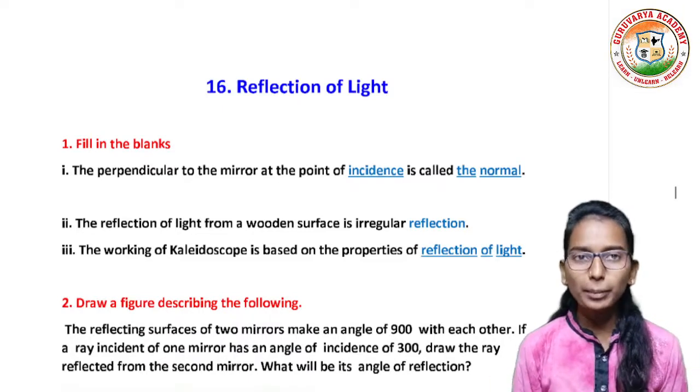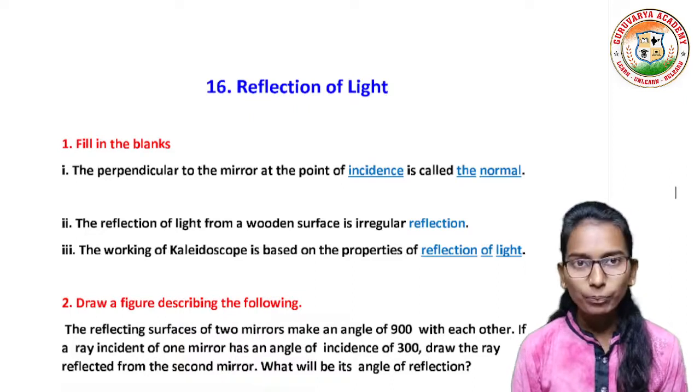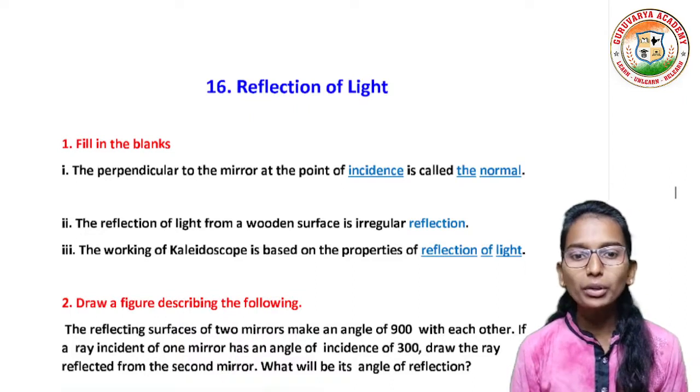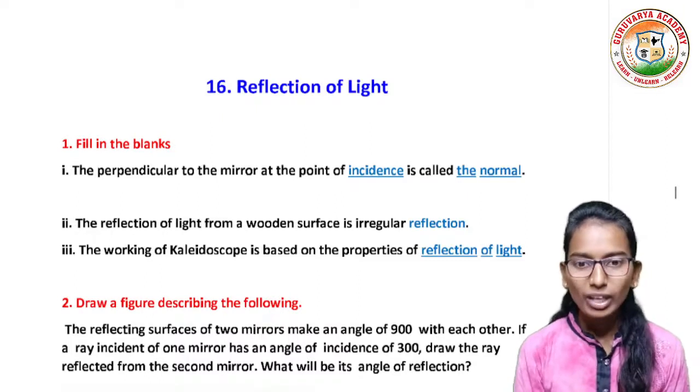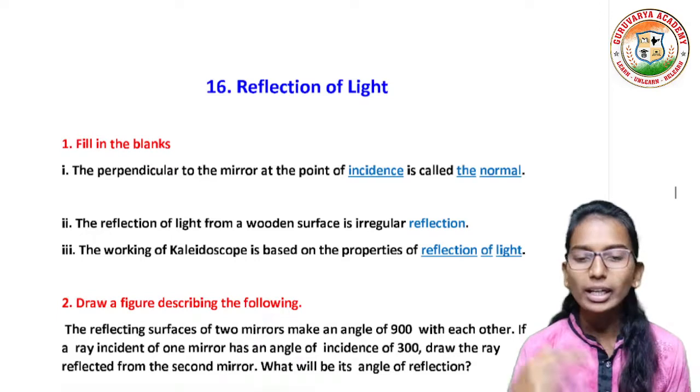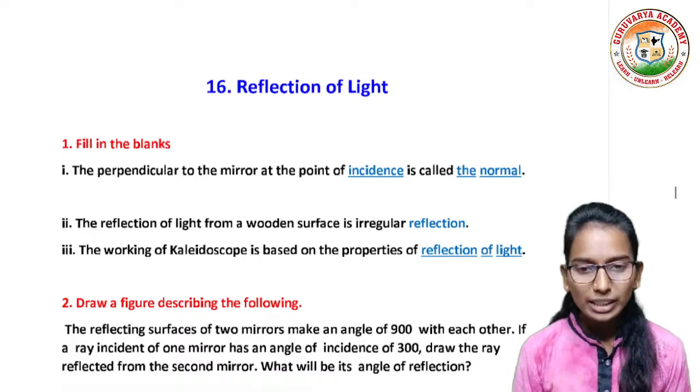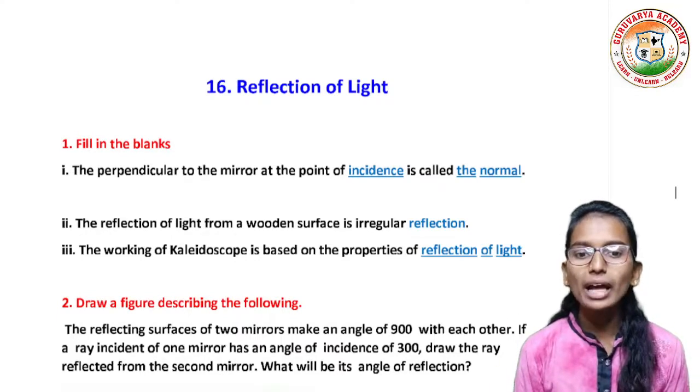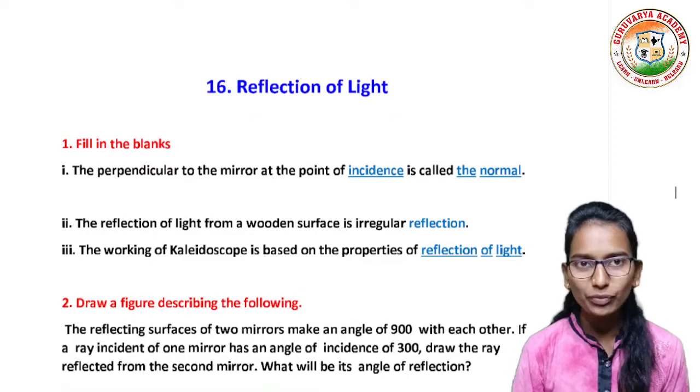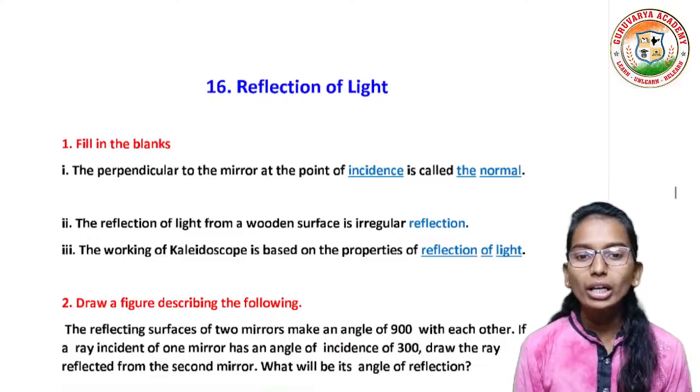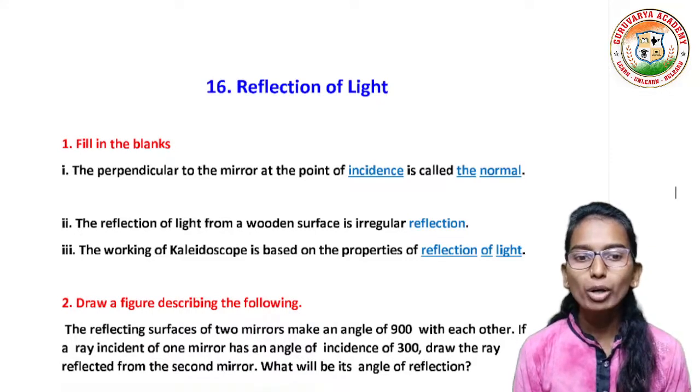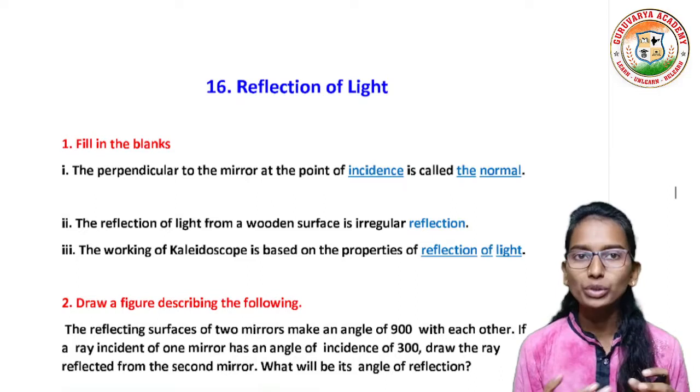Question number first, fill in the blanks. First, the perpendicular to the mirror at the point of incidence is called the normal. Second, the reflection of light from a wooden surface is irregular reflection. Third, the working of kaleidoscope is based on the properties of reflection of light.